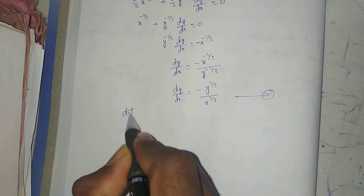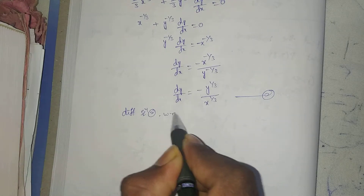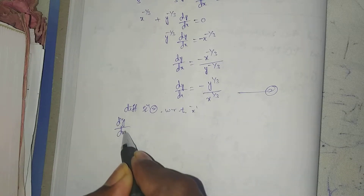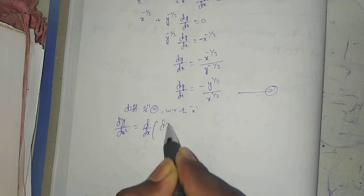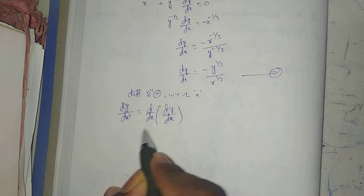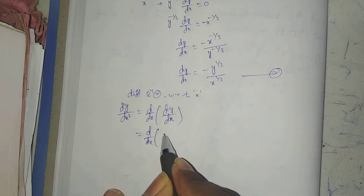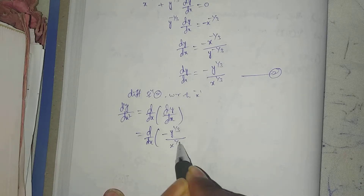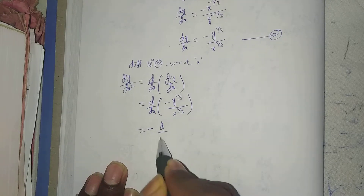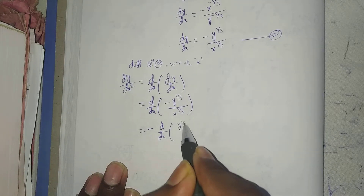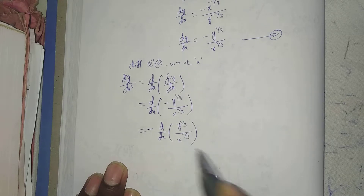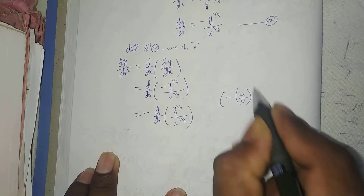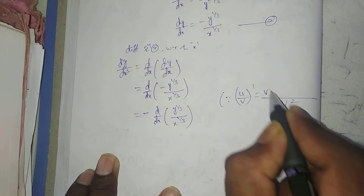Again differentiating equation 2 with respect to x. d²y/dx² — we apply the quotient rule formula: d/dx(u/v) = (v·u' - u·v') / v². Here u = -y^(1/3) and v = x^(1/3).